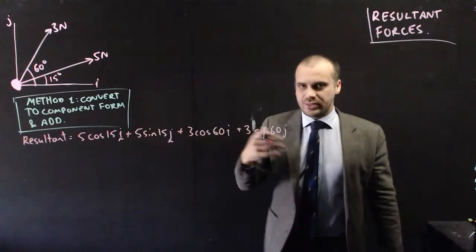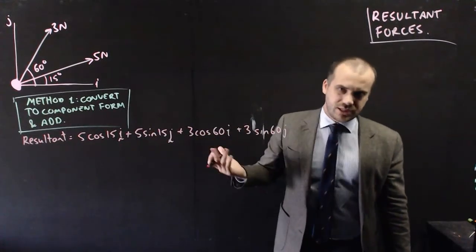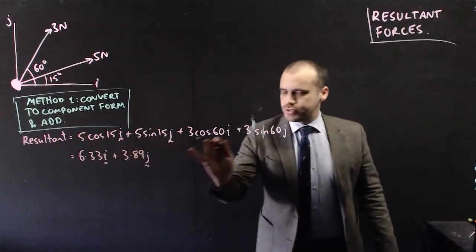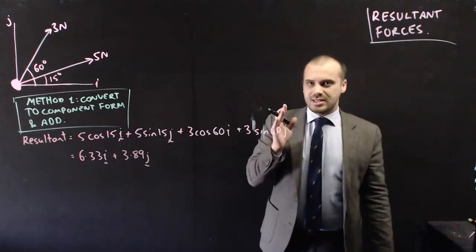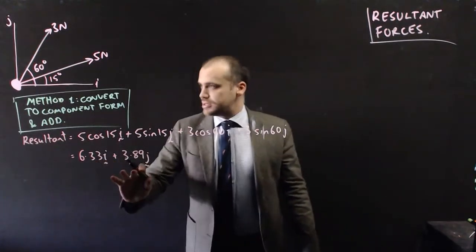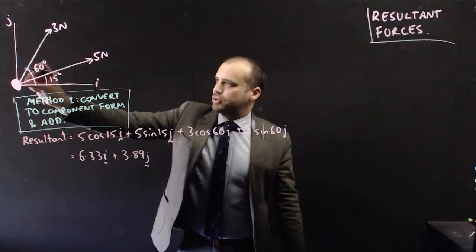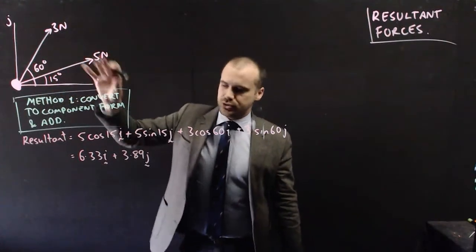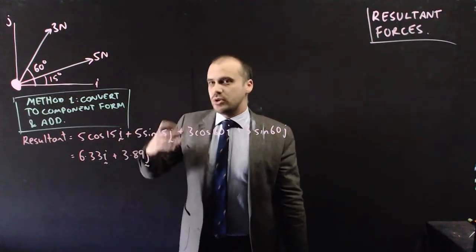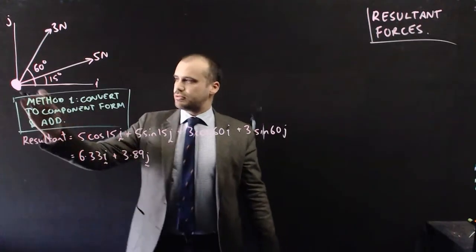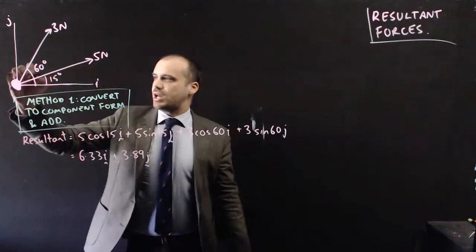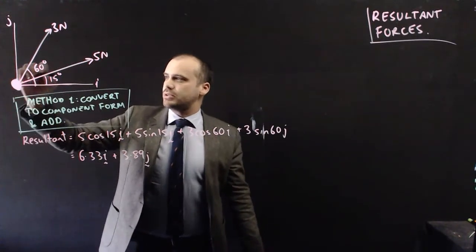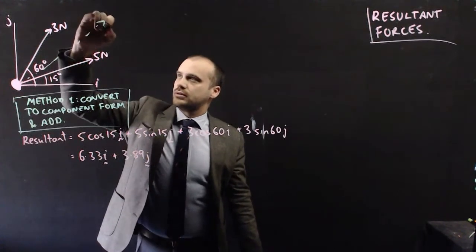And then you can add them together. We're going to get some decimal answers here. Now, when you convert all four of those to decimals, and then add the i components and add the j components, you'll get this answer here. Now, what this says is that if you are pulling this particle with this force and this force in those directions, the result will be a force of 6.33 in the i direction, and 3.89 in the j direction, which is going to look something like that.